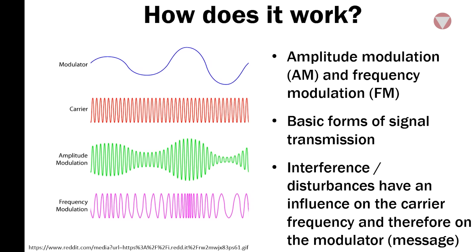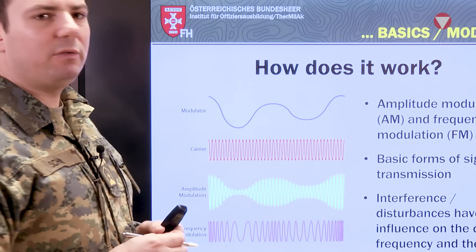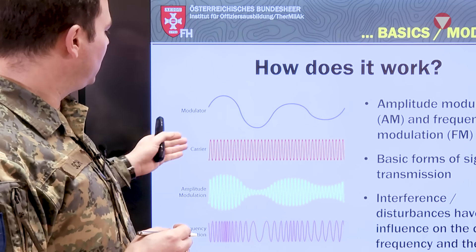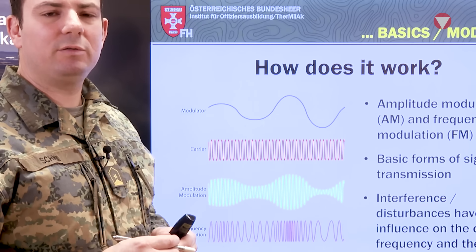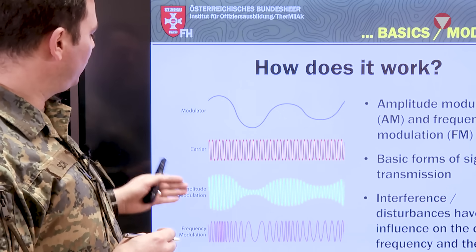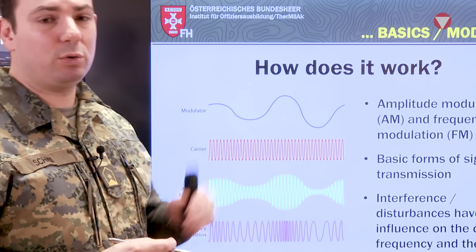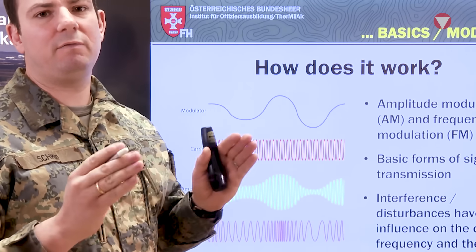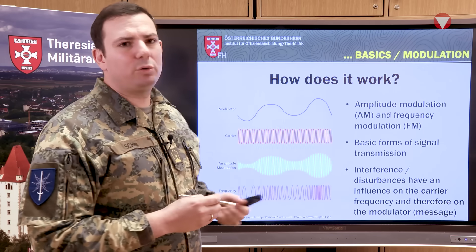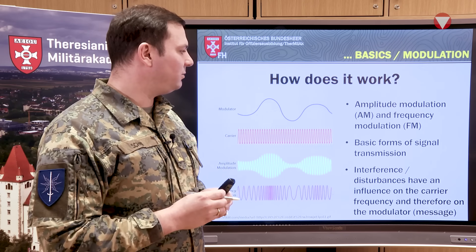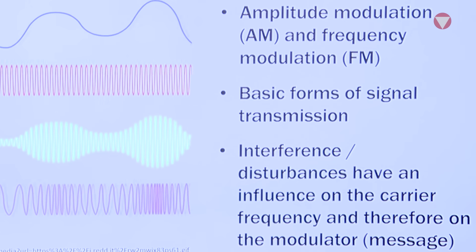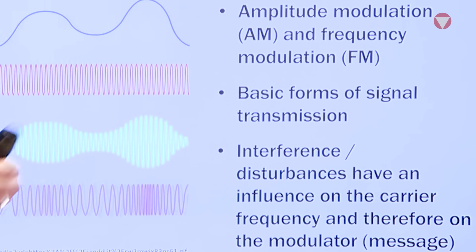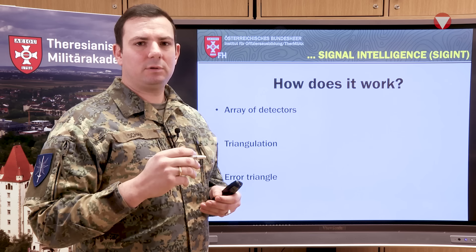Let's take a closer look at the details. On the upper hand, you would have a modulator, which equals the message of the signal. You would have a carrier frequency on which the signal is transmitted. You could use amplitude modulation, where you modulate the amplitude, or frequency modulation, where you modulate the wavelength. These are the two basic forms of signal transmission. Interferences or disturbances influence the carrier signal and therefore the message — what we call the modulator.